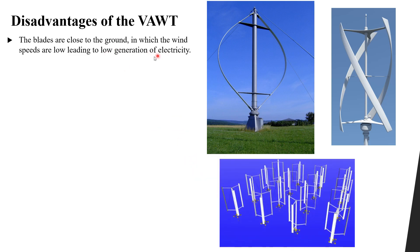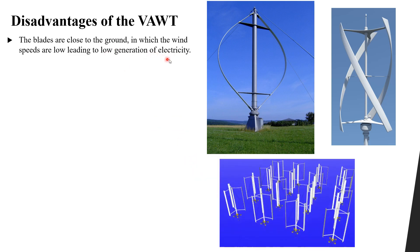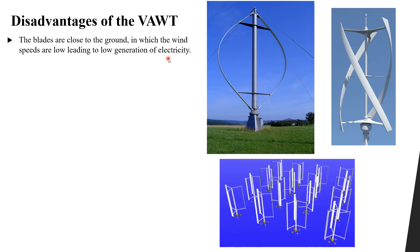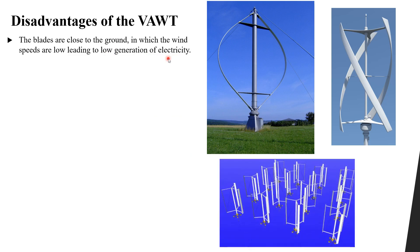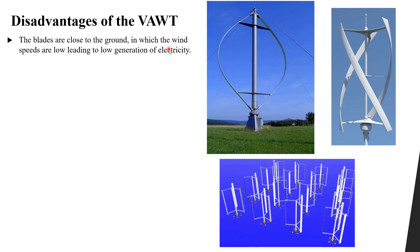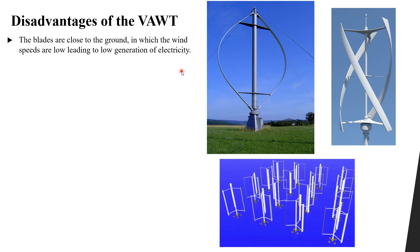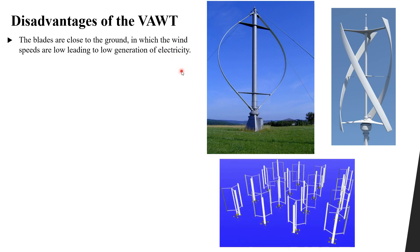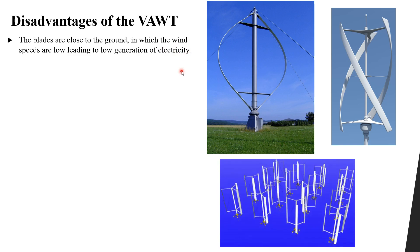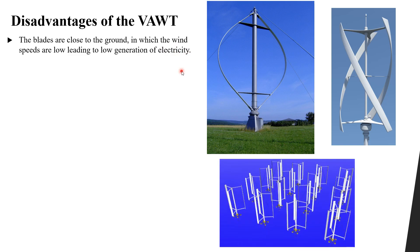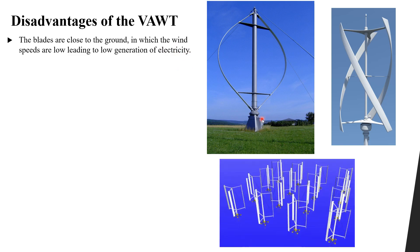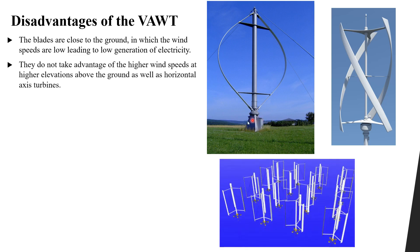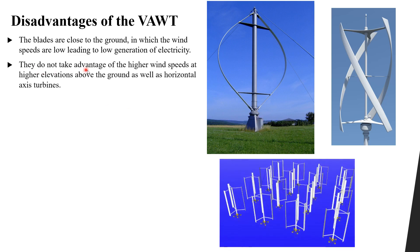Since the blades are very close to the ground, this leads to low wind speed and therefore low generation of electricity. Remember that the power generated depends on the velocity cubed — so as the velocity increases, much more power is generated.